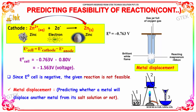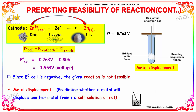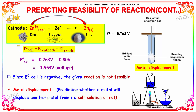Zinc, on reacting with electrons, gives zinc metal. Substituting the values into the formula, we have E0 cell = −0.763 volt minus 0.80 volt. Since both values carry a negative sign, we add them and indicate the negative sign, giving E0 cell = −1.563 volts.